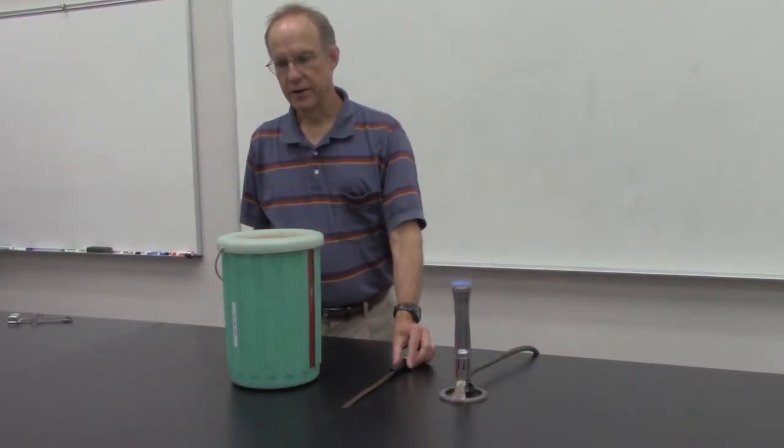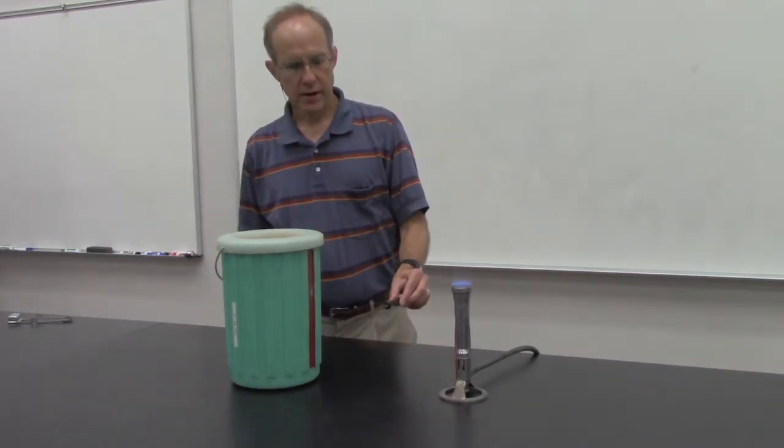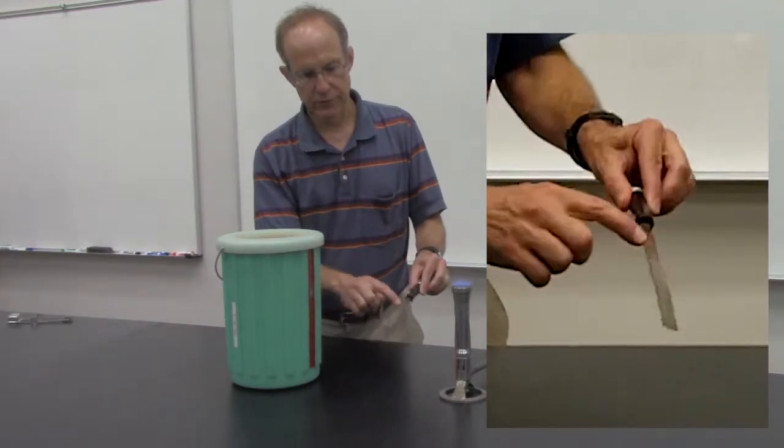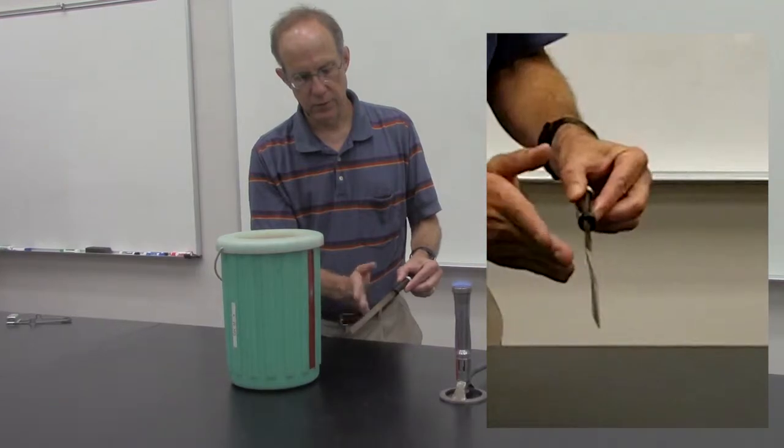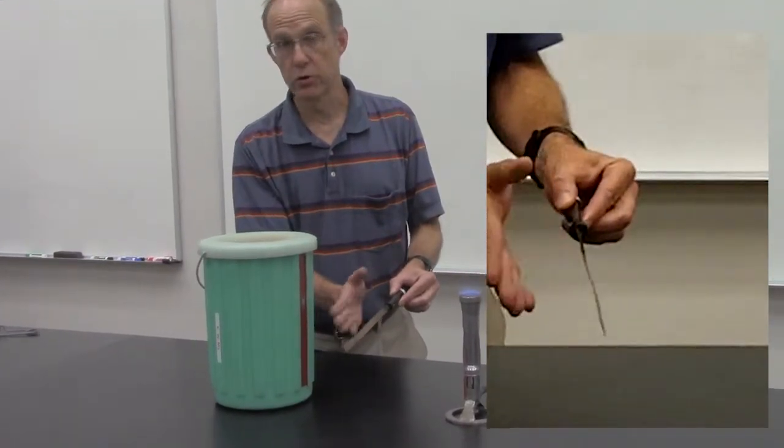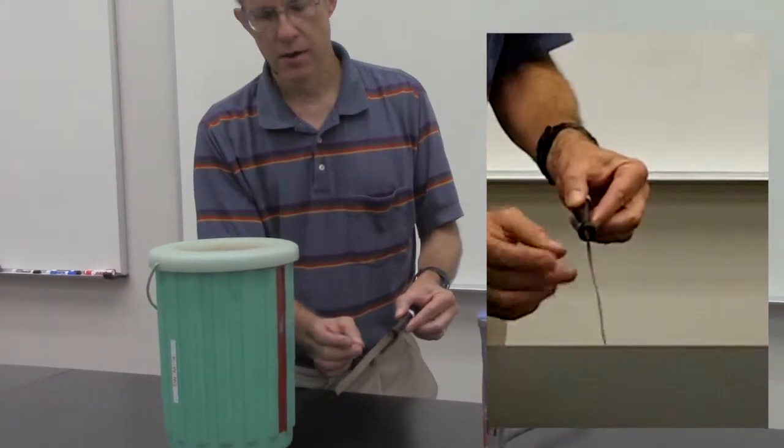Another way to demonstrate linear expansion is through the use of a bi-metallic strip. A bi-metallic strip has two different materials that are adhered together, and so when these materials are cooled or heated, one side will expand and contract more than the other.